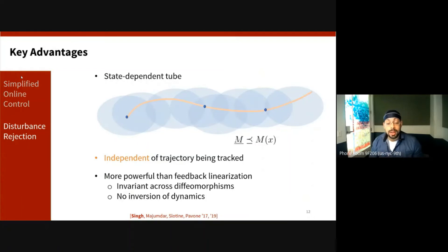And now we can sweep this ellipsoid along our trajectory and use this as a collision margin when planning trajectories. And now we have a bound that is independent of the trajectory that's being tracked, and the result itself is more general than techniques like feedback linearization.